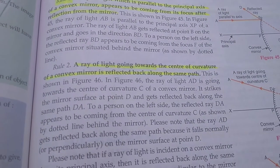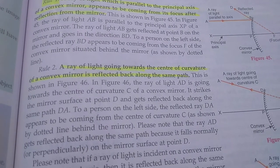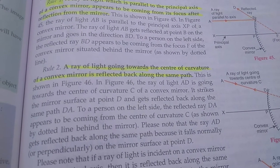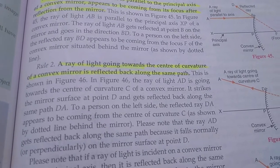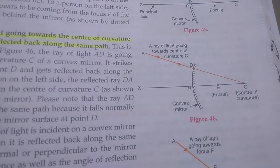Now rule number two. A ray of light going towards the center of curvature of a convex mirror is reflected back along the same path. This is the image.